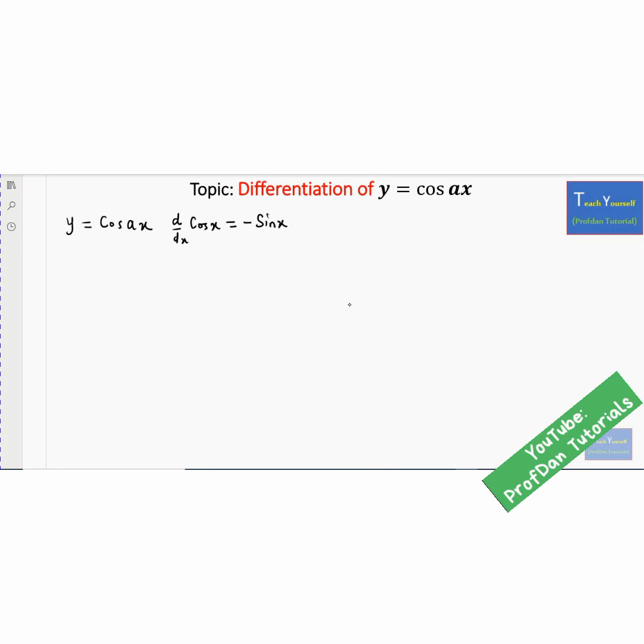In this case we're going to apply what we call the chain rule or the function of a function. And how does that work? Now you look at this ax here, you make it as a representation, so we can say let u be equals to ax. Then our y becomes cos of u.